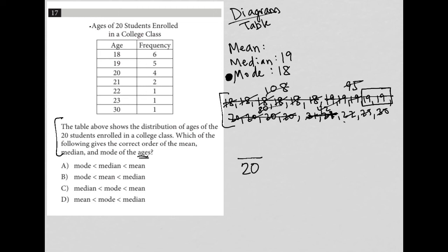I still need to add these as well. So I'm going to add my 22, add my 23, and add my 30. What I end up with is 400 as the sum of all the ages. 400 divided by 20 is 20, which means the mean is 20.